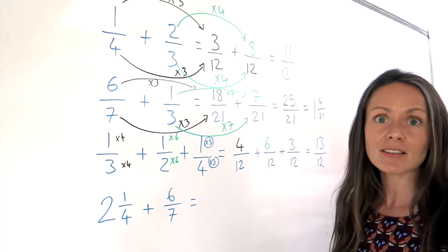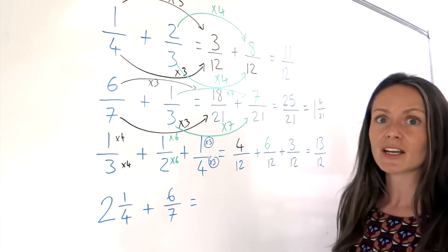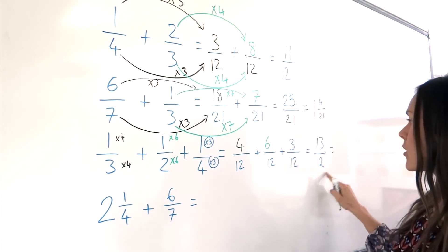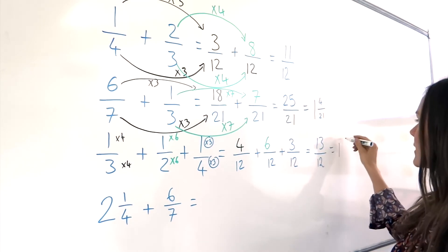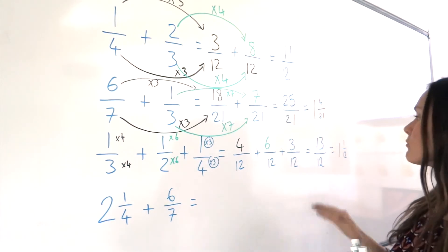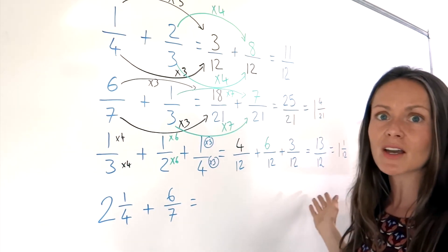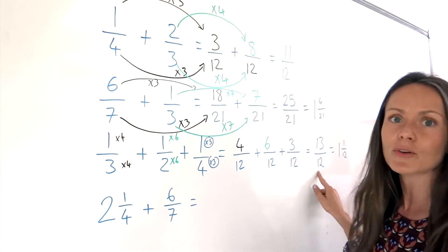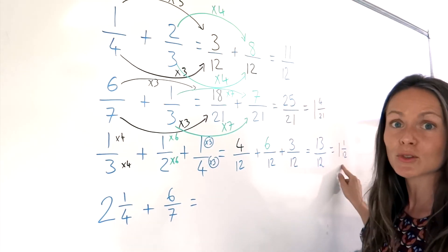I can't simplify the fraction 13/12. If you want to turn it into a mixed number, how many 12s in 13? One, and there's a remainder of 1. Either of those answers are acceptable, although sometimes in your exam questions they might ask you to write your final answer as a mixed number, so this is useful to know.